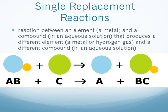Instead of a metal ion, we might see hydrogen. Our compound is always going to be in solution, specifically an aqueous solution. When we go through and predict the products for these single replacement reactions, we are going to be very specific as to the phase or state of matter for each substance in the chemical reaction.